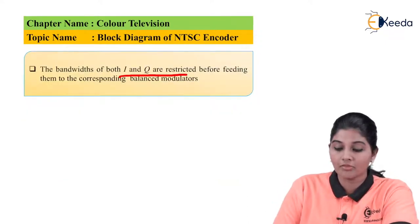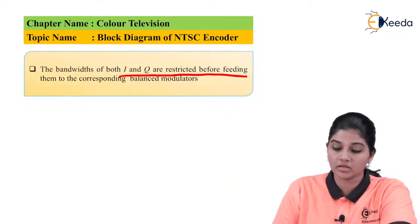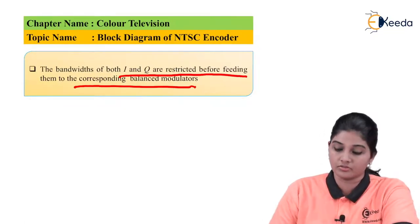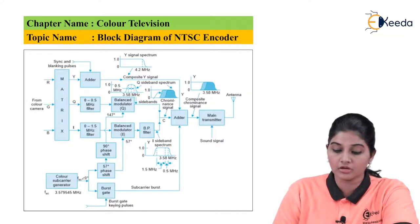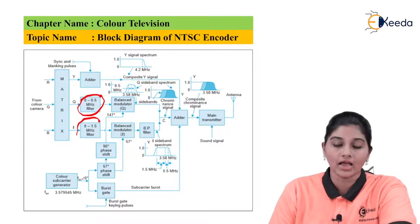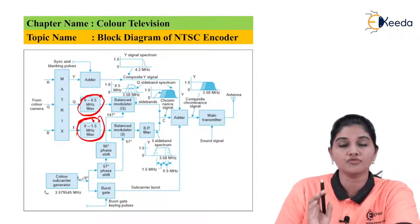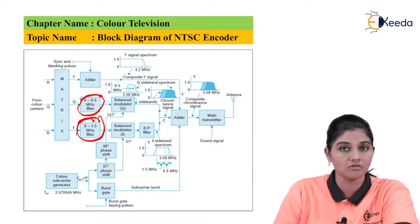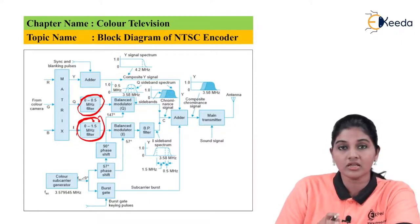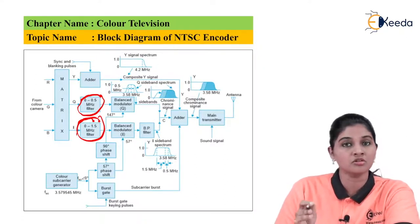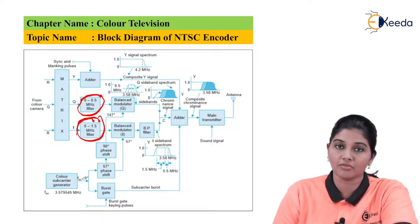The bandwidth of I and Q components is restricted before applying them to the balance modulator. Before the balance modulator, a 0 to 0.5 MHz filter and a 0 to 1.5 MHz filter are present to restrict the frequencies of the Q and I signals respectively. The Q signal is frequency-restricted using a filter of 0 to 0.5 MHz, and the I signal is restricted using a filter of 0 to 1.5 MHz.